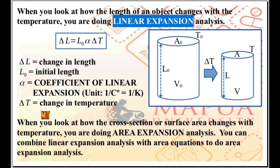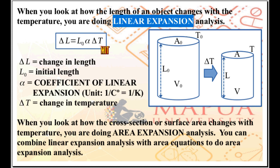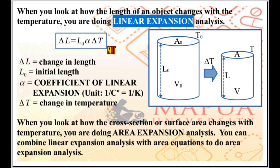Delta T is the change in temperature — final temperature minus initial temperature, T minus T-naught. So the linear expansion formula is: delta L equals L-naught alpha delta T. This applies to any length associated with the object, not just length L. It is also applicable to the radius of the cross-section area, so delta R equals R-naught times alpha times delta T, and similarly to the circumference of the circular cross-section area.